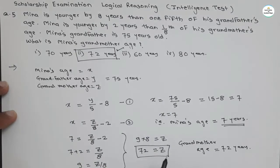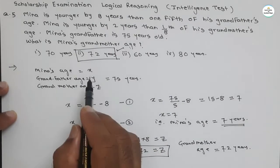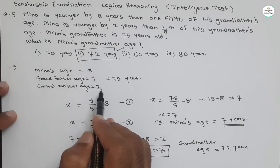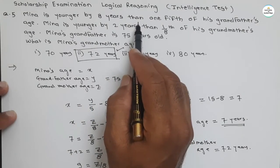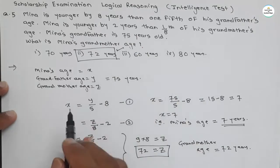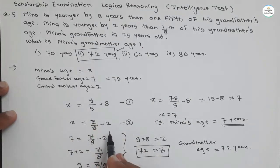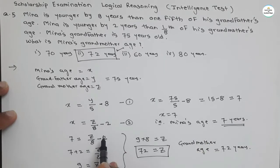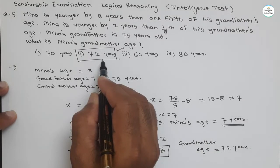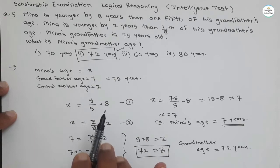In a very simple way we have approached this solution. First we assumed the variables, and with the help of the data given in the question we derived these equations. By solving the equations we got the value of the variable and our answer. This is a very simple way to solve such types of questions.